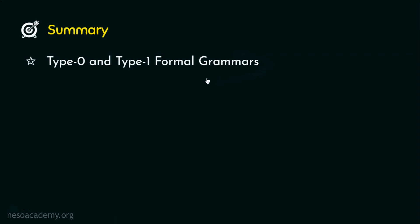So, in this session, we observed two different types of formal grammars, type 0 or unrestricted and type 1, that is the length increasing or context sensitive grammar.